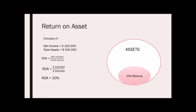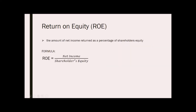Lastly, return on equity, or ROE, is the amount of net income returned as a percentage of shareholders' equity. Return on equity measures a corporation's profitability by revealing how much profit a company generates with the money shareholders have invested. The formula for this is net income over shareholders' equity.